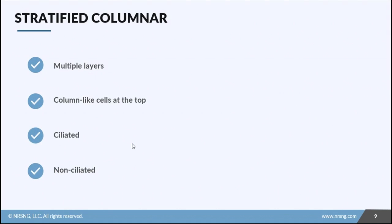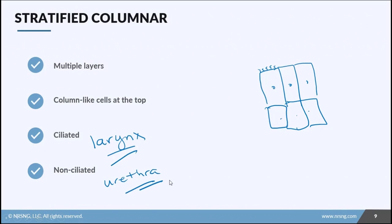Next is stratified columnar. Multiple layers of cells, and the top layer is column-like. These could be ciliated, like in the larynx or the voice box, or they could be non-ciliated, which we find in the urethra. Obviously, just depending on where this type of epithelium is located. As you can see, this is not very widespread either.